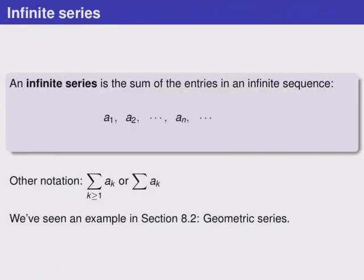In this section, we meet the idea of an infinite series, which is the sum of the entries in an infinite sequence. If we start with an infinite sequence, like a_n written below, and add up each of the terms, we get an infinite series, which can be represented by the summation on the right. We can also write it in two other ways written below here, all of which represent the same infinite sum. We've already seen an example of this in section 8.2, where we met geometric series.